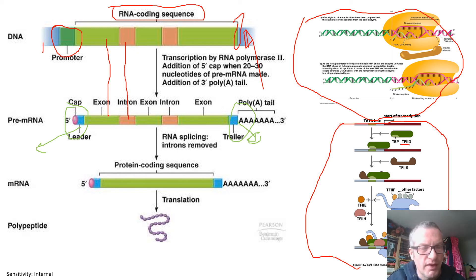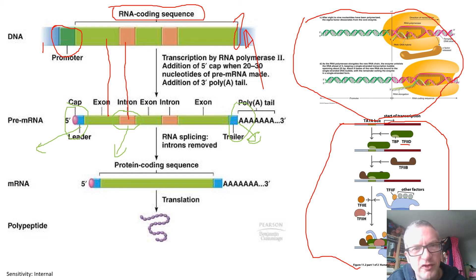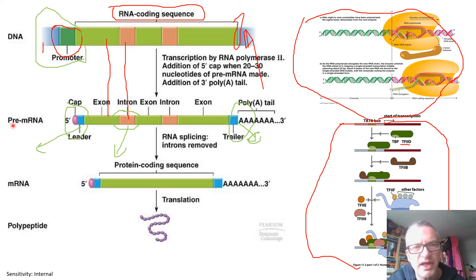We didn't talk about introns and how they're removed in this lecture — that happened in the gene structure lecture — but this is where that process would take place. This is eukaryotes only. Note that introns are shown here in the RNA coding sequence, but they can also occur in the promoter regions and in the untranslated regions as well. This stage is called the pre-messenger RNA.